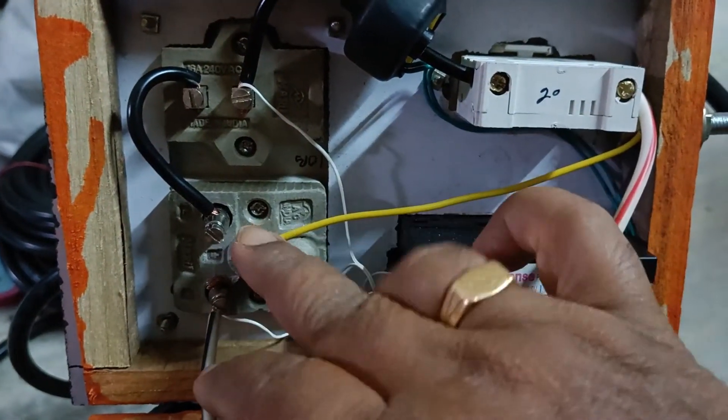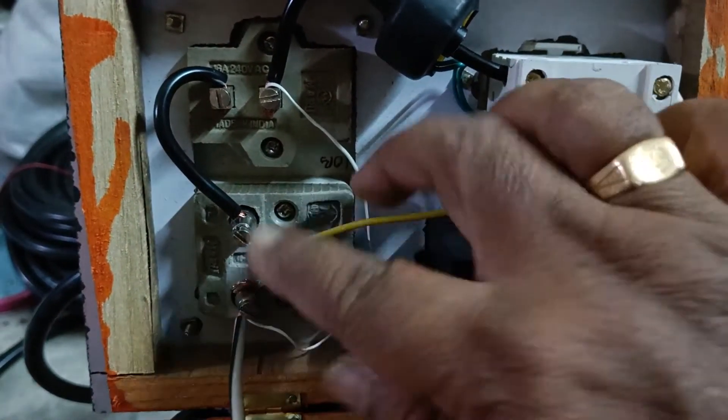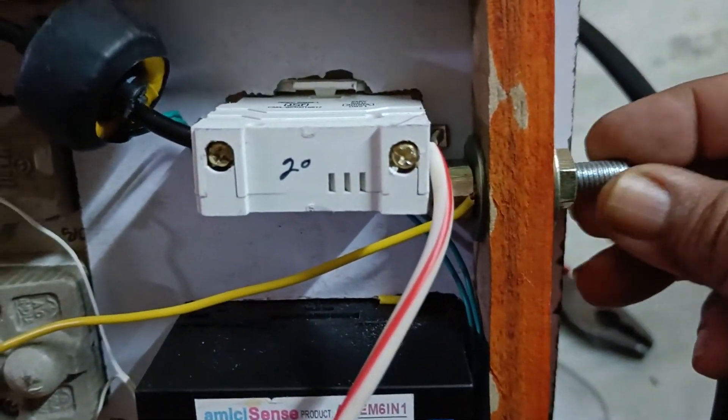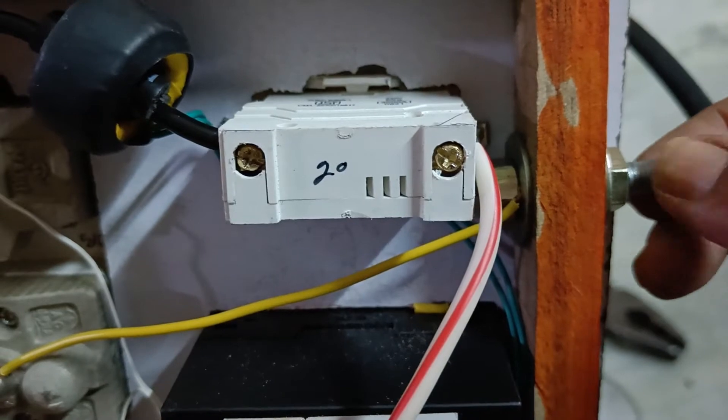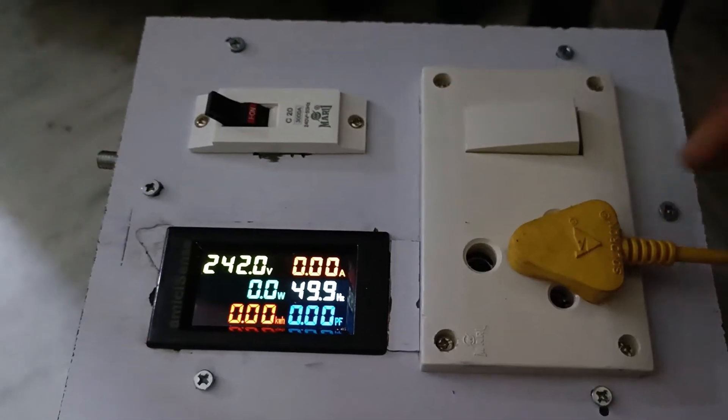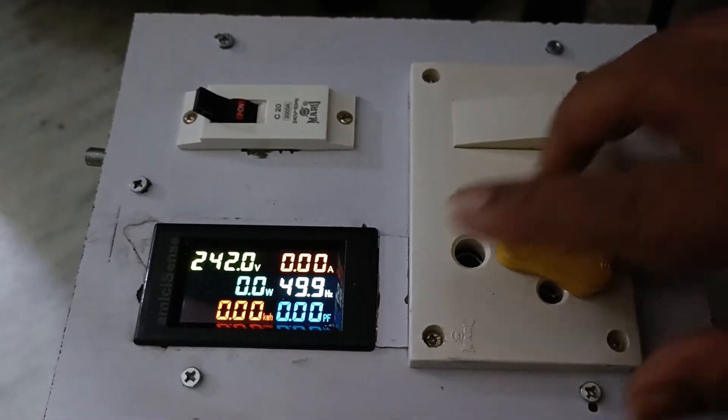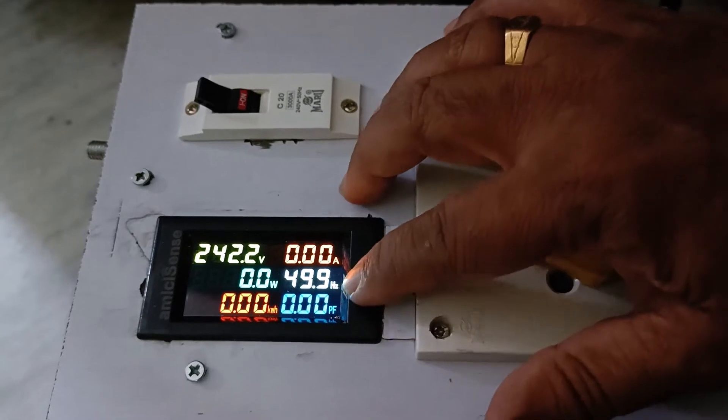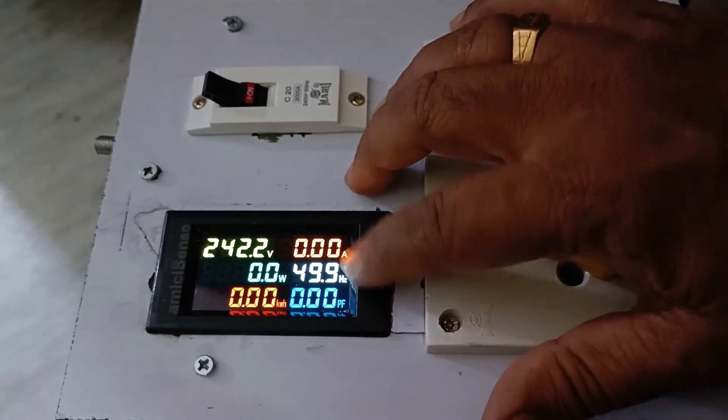Now the last connection to give is the earth connection. What I have done is from this earth I have used a one square mm wire to connect to this bolt. So from this bolt we will take extra wire and connect it to the power supply. You can see it's showing 242 voltage and 49.9 Hertz.